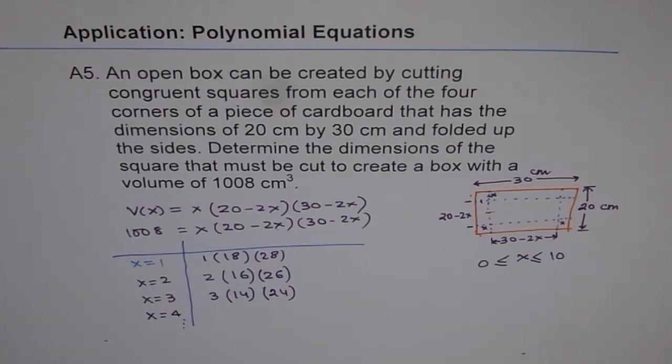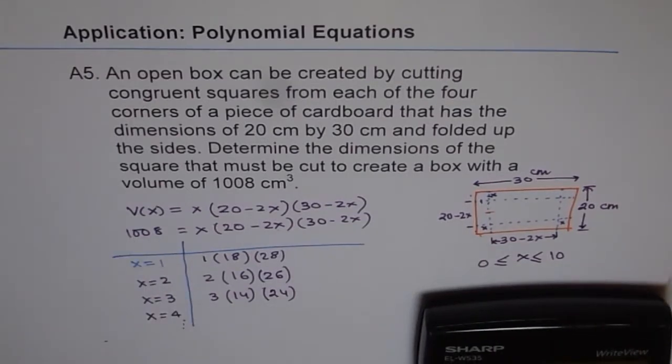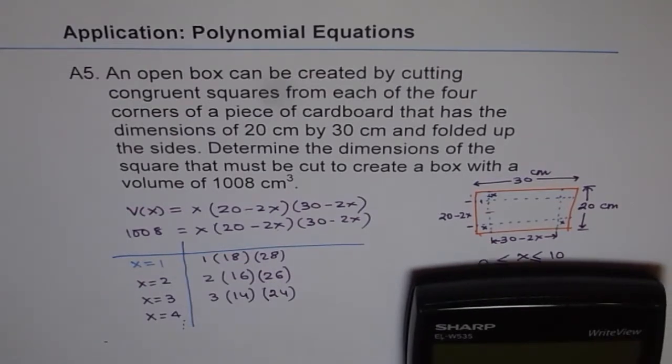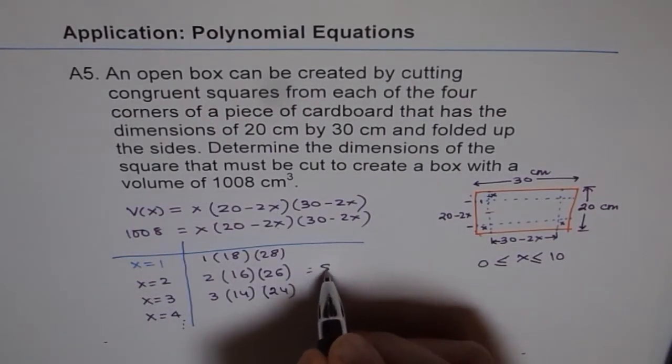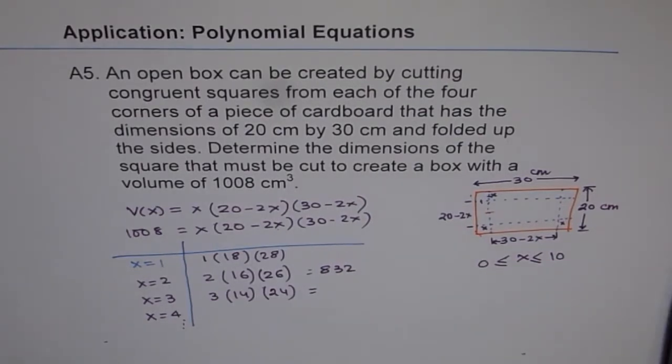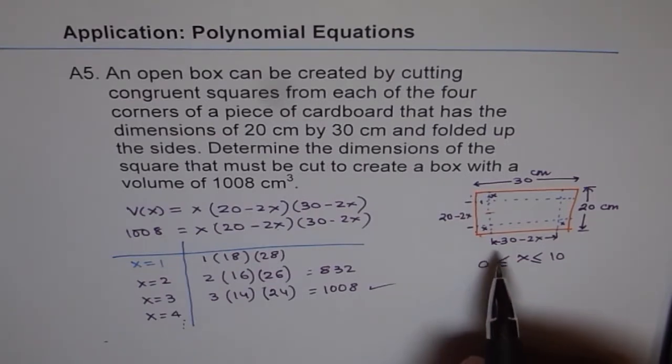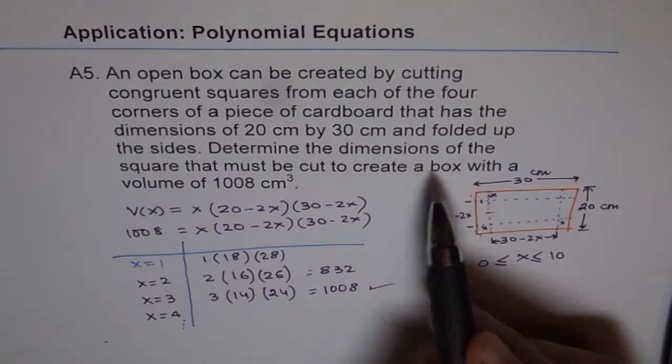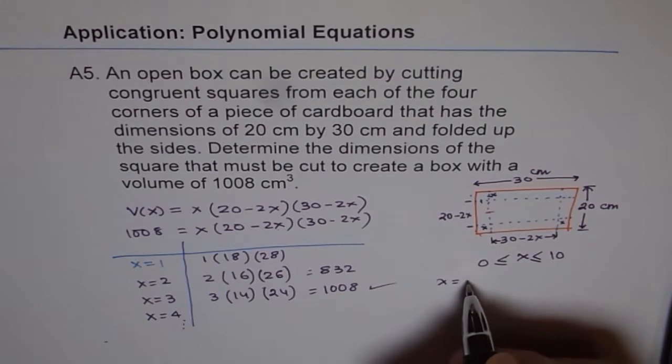And by doing this I can see which one of them is equal to 1008. So if I use the calculator, which I have to use in any case, so if I do, let us start with 2 times 16, so we get 2 times 16 times 26 equals to 832. So for this I get 832. And now let me do 3 times 14 times 24 and I get 1008. So that is what I was looking for and therefore my solution is x equals to 3. So at least I have got one value. So that is what my answer could be. I say the value of x which satisfies this particular question is x equals to 3.